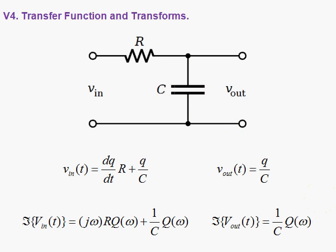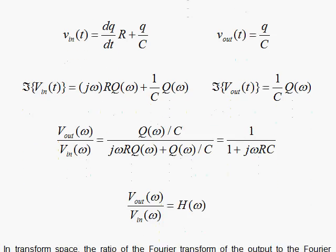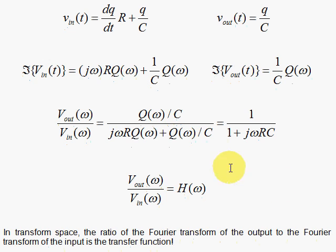And then we apply the Fourier transform to both sides of this equation, using our rules. We get jω here. And then we have the R times the Fourier transform of the Q, represented here by capital Q.